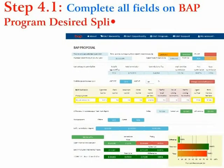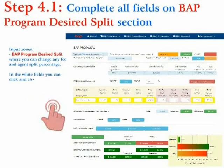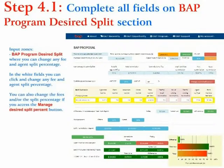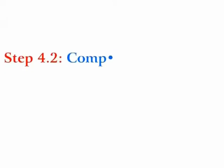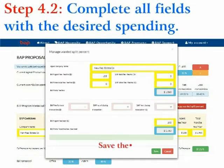Step 4: Complete all the fields on the B.A.P. Program Desired Split section. The input zones are the B.A.P. Program Desired Split, where you can change any fee and agent split percentage. In the white fields, you can click and change any fee and any agent split percentage. You can also change the fees and or the split percentage if you access the Manage Desired Split Percent button. Complete all the fields with the desired spending and save the data.